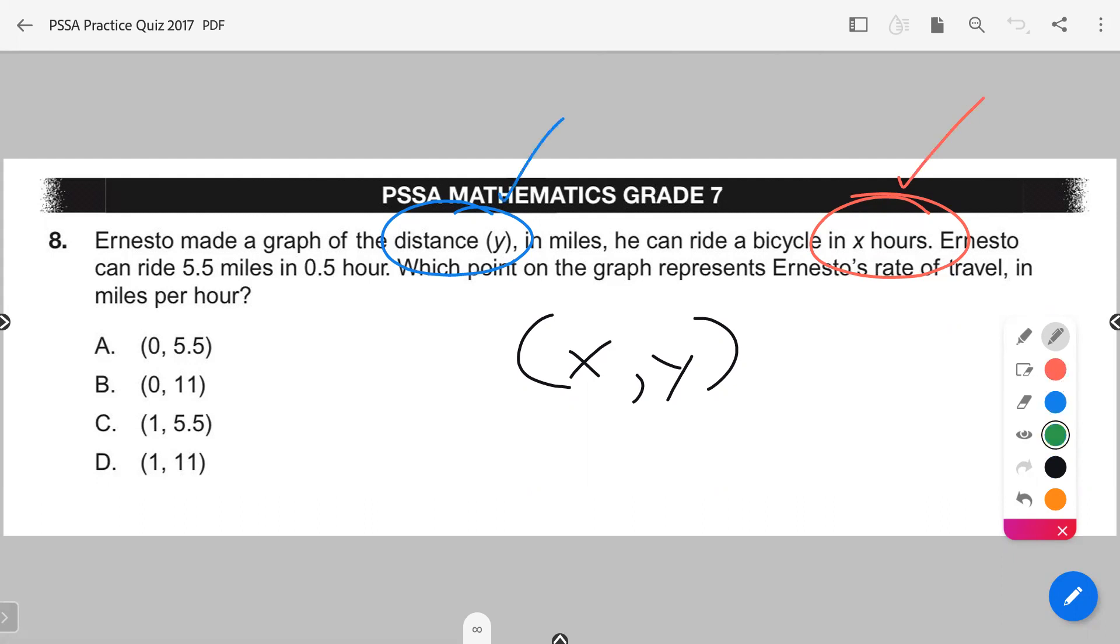So according to what they give us right here, if I were to write this point for this value of what we see right now, hours has to be first. So a half an hour, and then it's going to be 5.5 miles. Hours and miles. If I break this down and color code this for you, this is going to be this, and this is going to be that. But that's not what they're asking for.